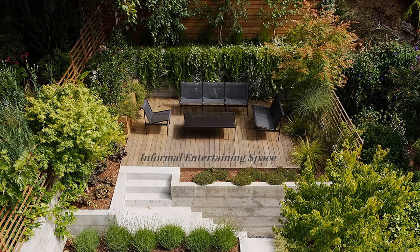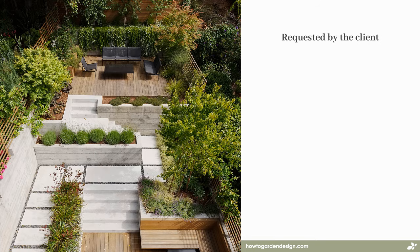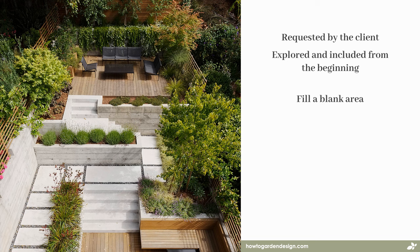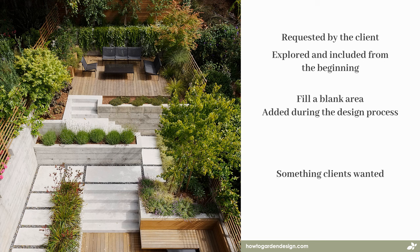Just a quick caveat here: the process we're following may not be what the designers actually followed. Areas in garden designs tend to appear in one of two ways — they're requested by the clients and explored from the beginning, or they fill a blank area in a design, something added midway through the process. It's possible the clients wanted two spaces to entertain, but it's also possible the designers added it of their own accord, recognising this position in the yard would be a good spot for that kind of activity. So the principles and processes we're going to explore may be completely wrong, but I like walking you through this project because it allows me to illustrate those three principles anyway.